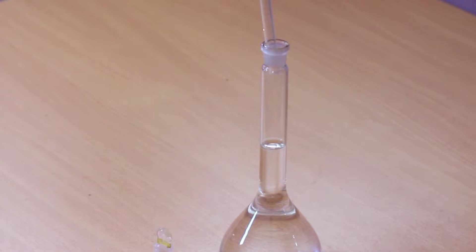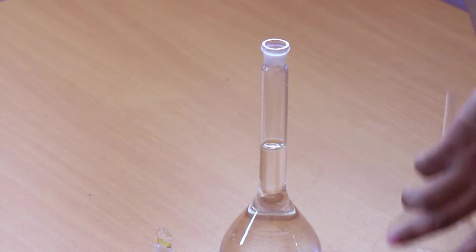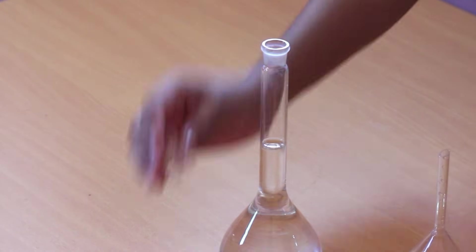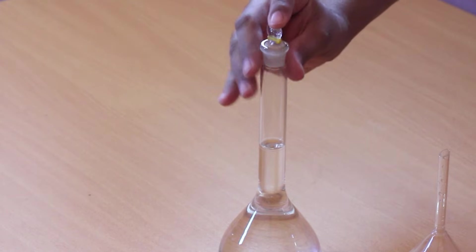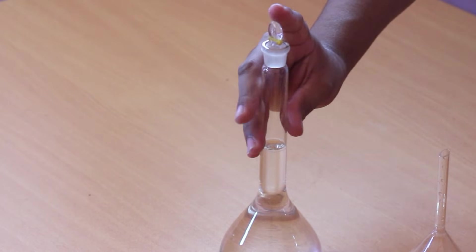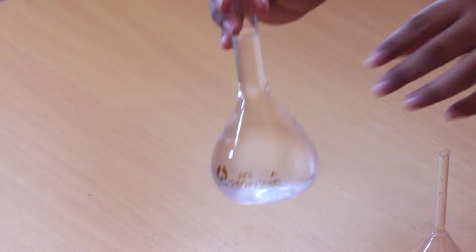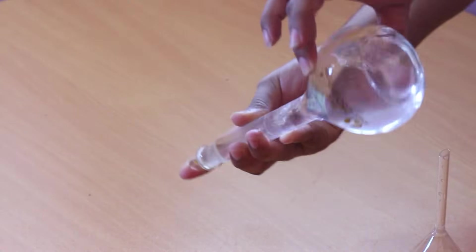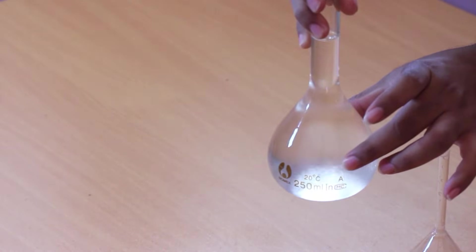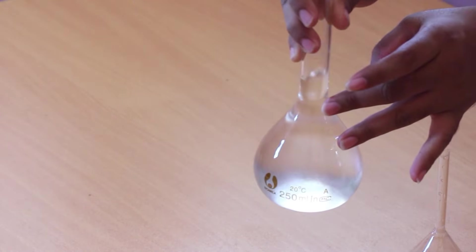After this, we remove the funnel and close the volumetric flask with its lid. Then we use this technique to correctly mix the solution. Here we have to mix it 2-3 times. Keep in mind that we have to reduce the contact with the bulb of the volumetric flask as much as possible.